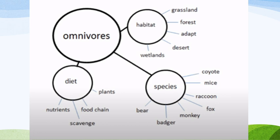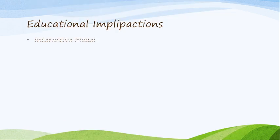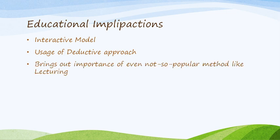A concept map with categories like Omnivores, Habitat, Species, and Diet — with subcategories such as Grassland, Forest, Desert, and Wetland — is an example of an advanced organizer. Educational implications include the interactive model, deductive approach, and lecture method. Lecture method works very well with advanced organizers. A learner type called the Theorist especially benefits from advanced organizers — theorists need to know first what is going to happen.